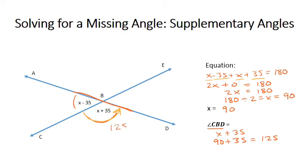And again, I could find the other angle as well if I wanted just to be sure I'm right. x minus 35 will be 90 minus 35, which would give me 55. And so I think this is 55 and this is 125. But I can add them together just to make sure that they are truly supplementary. And when I do that, I get 180.